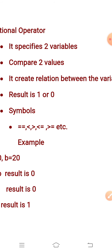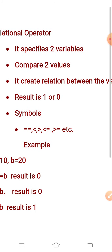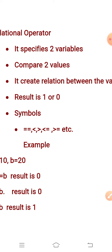The result of a relational operator is either one or zero. One means true and zero means false. In C++, when your result is true it displays as 1, and when false it displays as 0 — these are bit values, like signals.